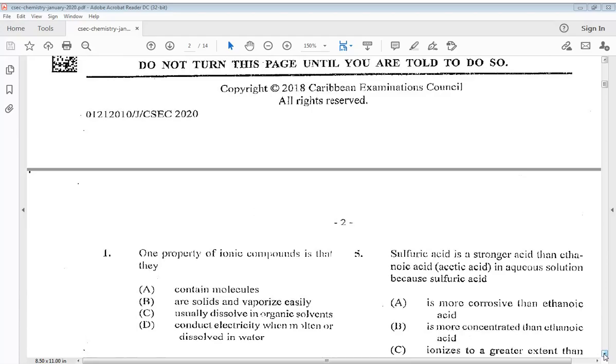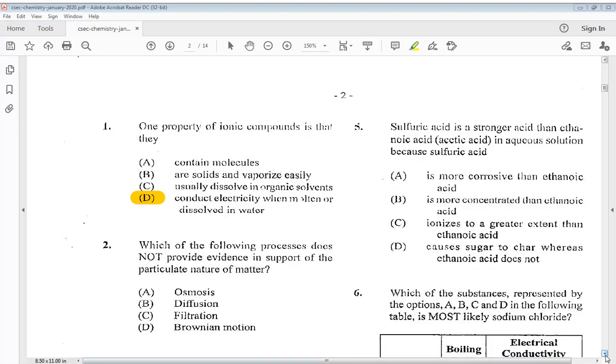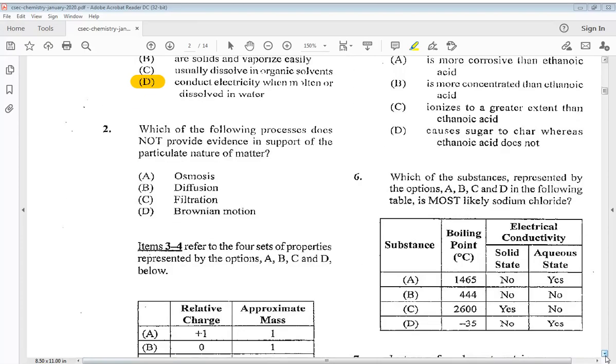I will just be giving you the answers to these questions. The first one says one property of ionic compounds is that they: A. contain molecules, B. are solids and vaporize easily, C. usually dissolve in organic solvents, D. conduct electricity when molten or dissolved in water. So the answer is D. Let's move on to question number two. Which of the following processes does not provide evidence in support of the particulate nature of matter? A. osmosis, B. diffusion, C. filtration, D. Brownian motion. So the answer is C. Filtration.